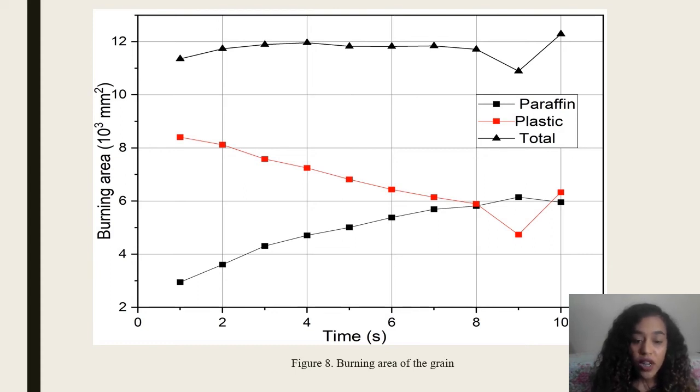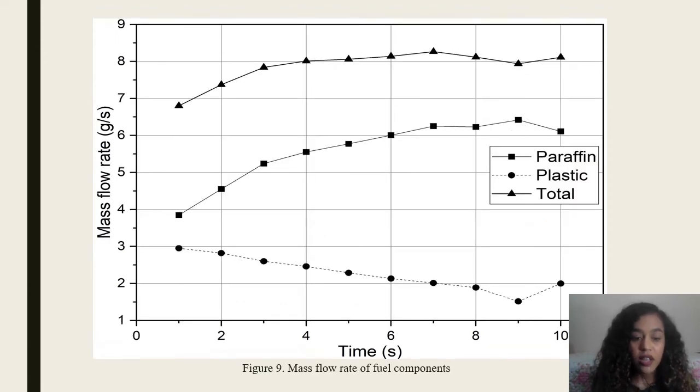The regression rates and, consequently, the mass flow rates of plastic and paraffin were calculated by previously presented equations. Figure 9 shows the mass flow rates of paraffin, plastic, and their total.